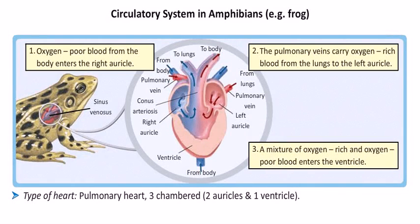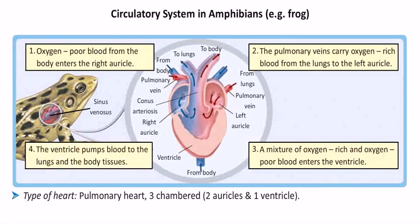Both the auricles contract and pump blood into the ventricle. The deoxygenated and oxygenated blood mix in the ventricle. The ventricle contracts and the blood is pumped into a large artery called the aorta, which distributes the mixed blood to all the body tissues. The heart also pumps blood to the lungs for oxygenation, which is why it is called a pulmonary heart.